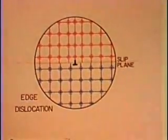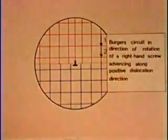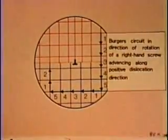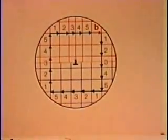The Burgers vector of an edge dislocation is normal to the dislocation. The slip or glide plane is defined by the Burgers vector and the dislocation line.